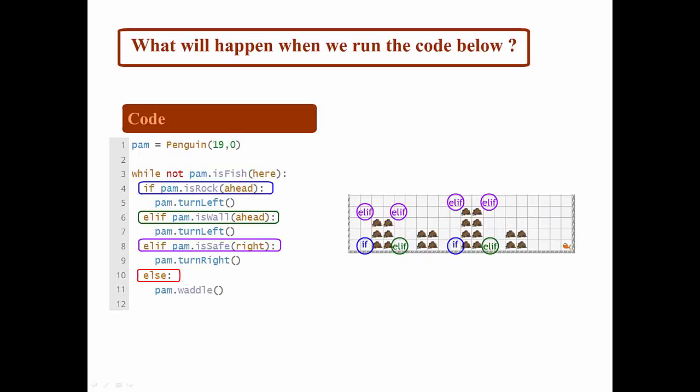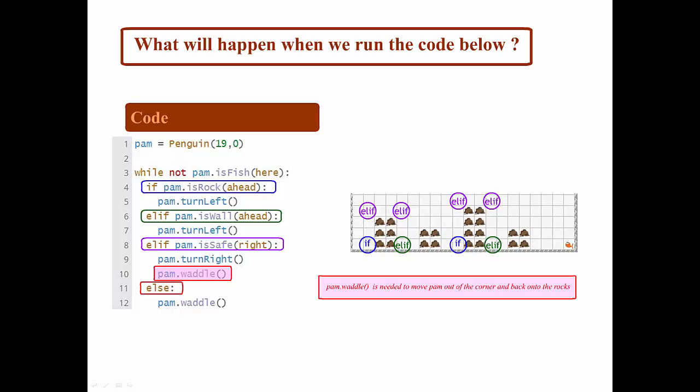This happens because of a shortcoming in our second ELIF statement, ELIF pam.isSafeRight, which continues to be true every time the loop runs while Pam is in the corner. So it just continues to execute pam.turnRight. We have to add pam.waddle to get Pam out of that corner and back onto the rocks.